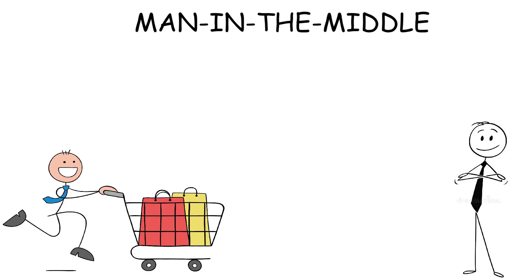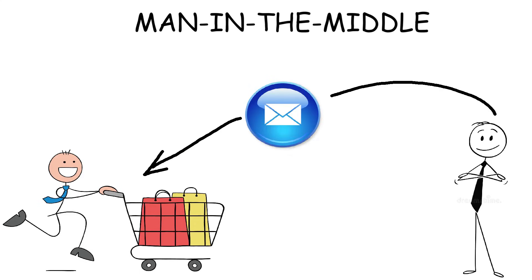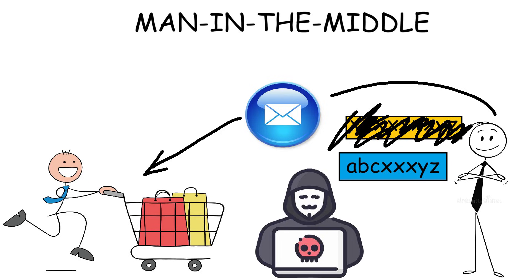A terrifying example: a seller is discussing a purchase through email with a client. When the seller provides his bank account number, the hacker changes the message to include his own bank account — so the hacker is the one who gets the payment.